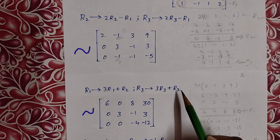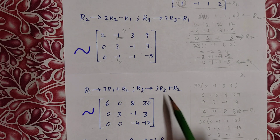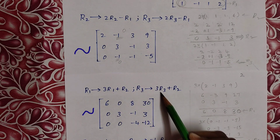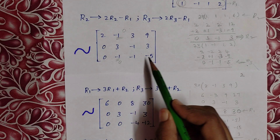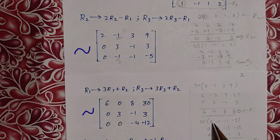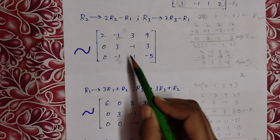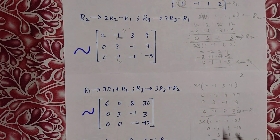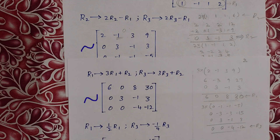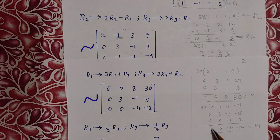Now performing R3: R3 turns to 3R3 plus R2. 3 into R3 [0, -1, -1 | -5] gives [0, -3, -3 | -15]. Adding R2 [0, 3, -1 | 3]: 0+0=0, -3+3=0, -3+(-1)=-4, -15+3=-12. So R3 becomes [0, 0, -4 | -12].